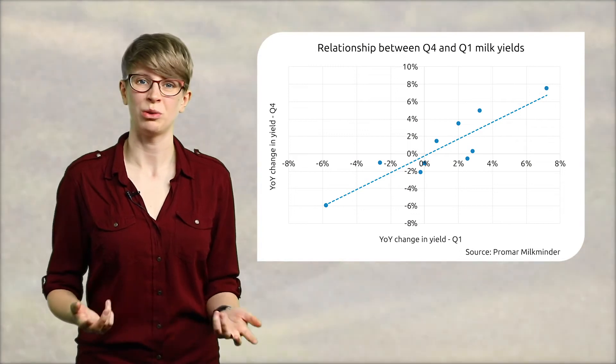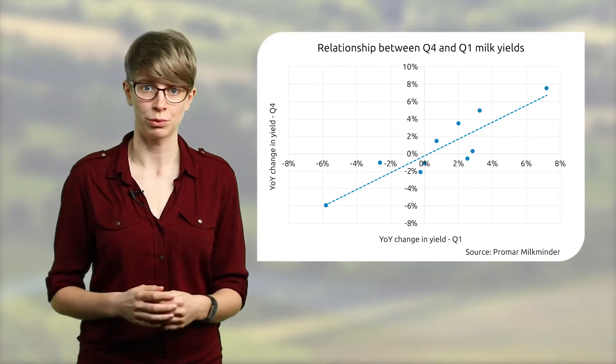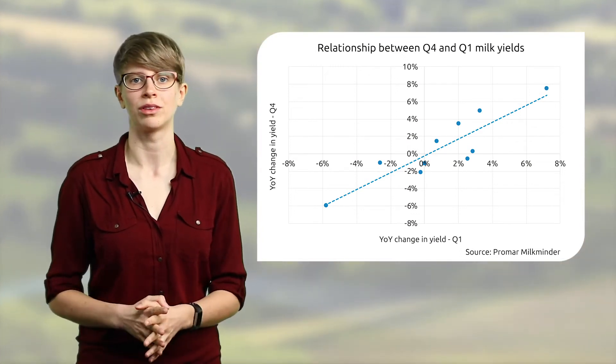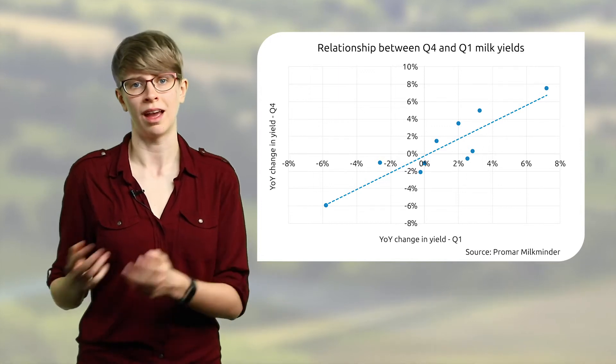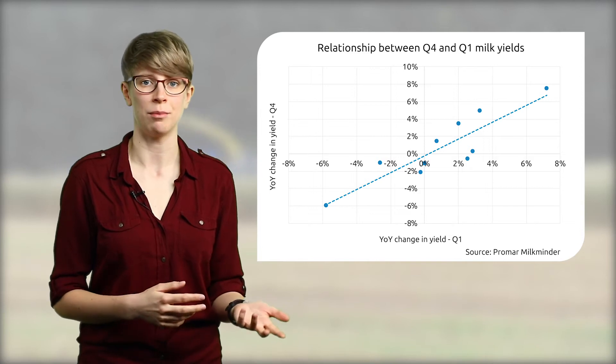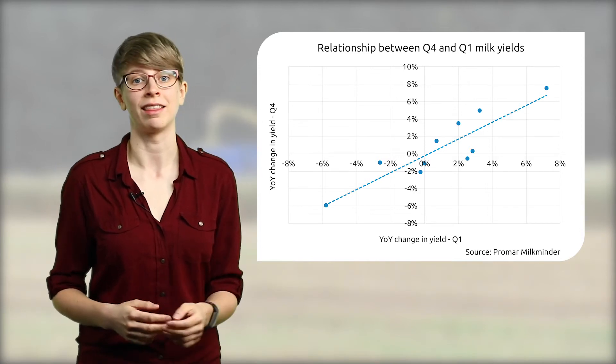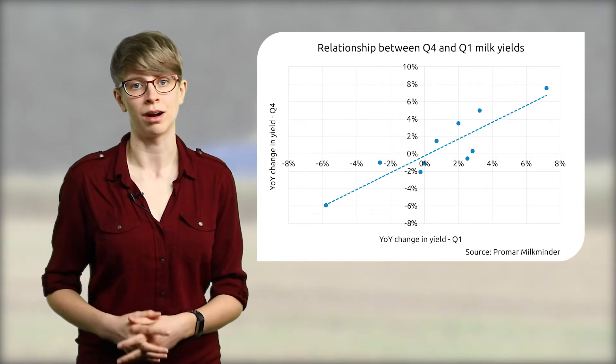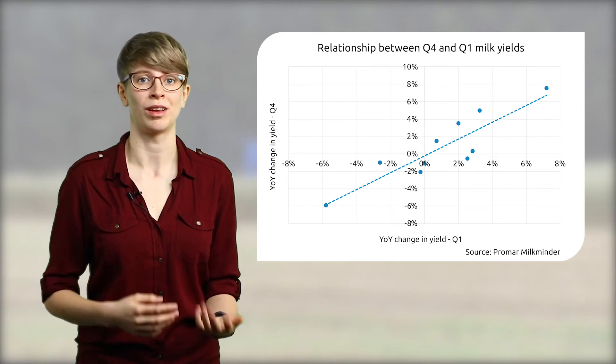Historical data shows us that there is a correlation between the year-on-year change in yields in the last quarter of one year and the first quarter of the next. This means that as October to December yields were high it is likely that they'll remain high for January to March which will keep supporting production.